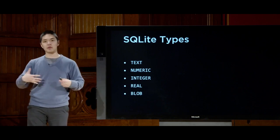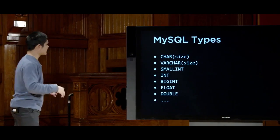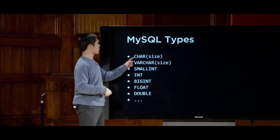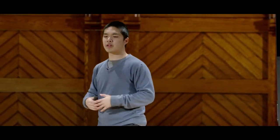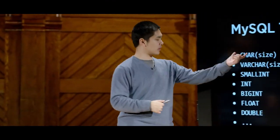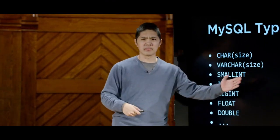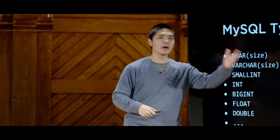Those are the basic types that SQLite supports, but other database management systems have other types. MySQL has a much longer list. In addition to a text type for arbitrary-length text, MySQL also has a type called char that takes an argument of size, for storing exactly that many characters. This can be advantageous when you know your data will be within a certain number of characters — for example, a US zip code might be exactly five characters. Varchar of a size is similar — a variable-length character — for when something might be up to a certain number of characters.